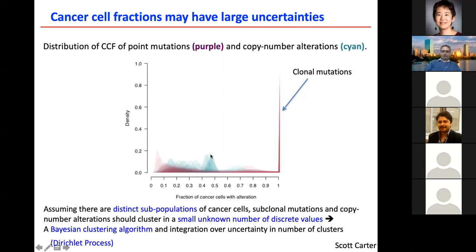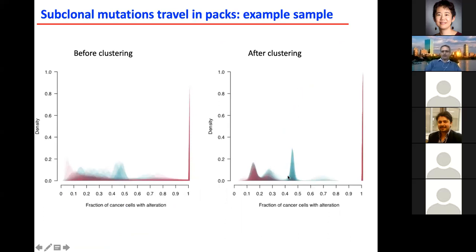We leverage the fact that a clone has mutations in it, and all mutations shared across the clone should have the same CCFs. We apply a Bayesian clustering algorithm using the Dirichlet process because we don't know how many clusters to expect. Using this, we find the number of clusters, and you can see it's much sharper before versus after clustering.